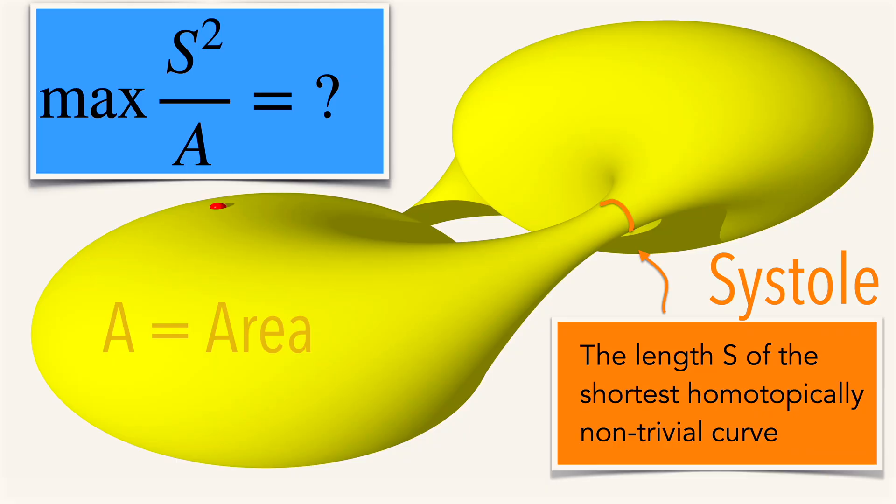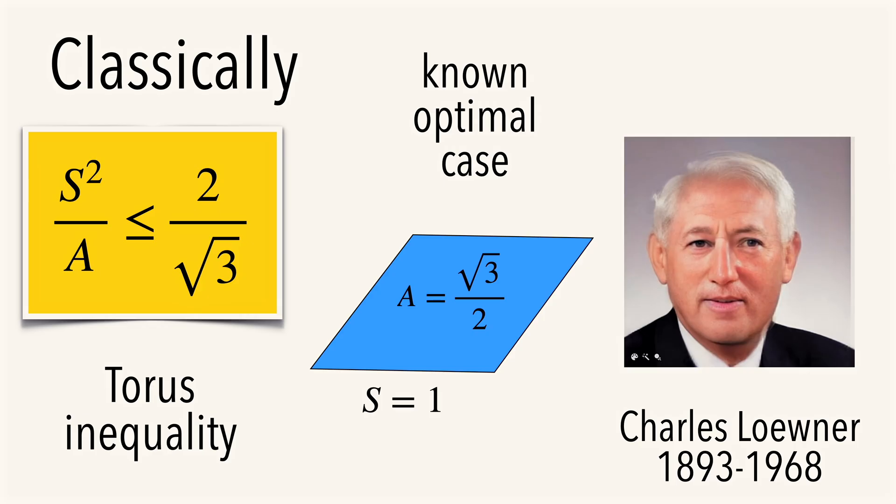The length of the shortest homotopically non-trivial curve is called the systole in a manifold. And you can ask, what is the maximum of s squared over a?